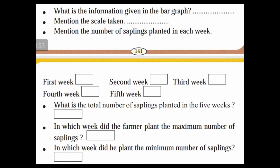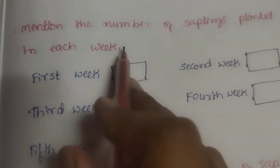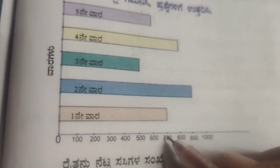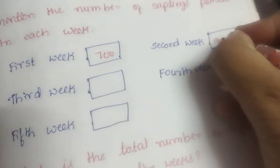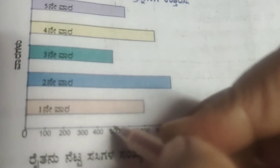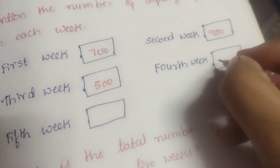The next bar graph shows the number of saplings planted in each week. The scale taken is 1 cm equal to 100 saplings. The number of saplings planted: 1st week is 700, 2nd week is 900, 3rd week is 500, 4th week is 800.